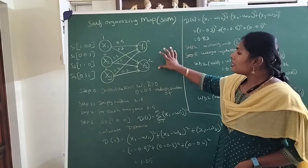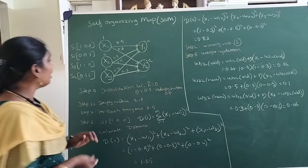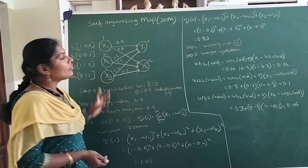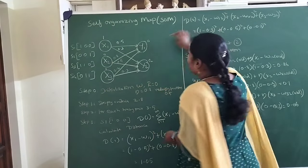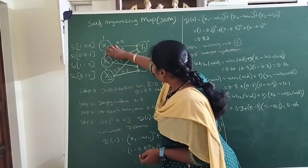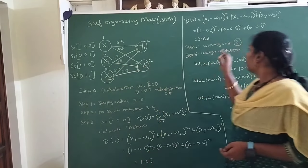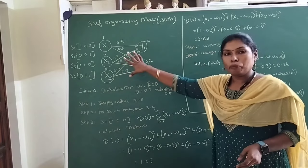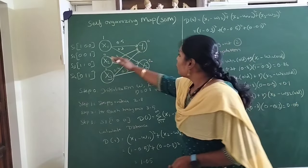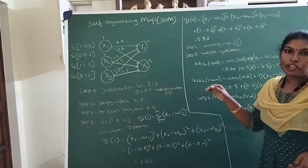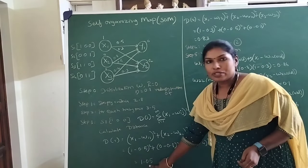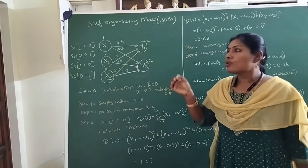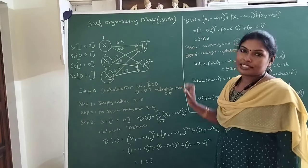Now I find the distance between the presented input and cluster C2. That is calculated as: 1 minus 0.3 the whole square, 0 minus 0.5 the whole square, and 0 minus 0.3 the whole square — i.e., x1 minus w12, x2 minus w22, x3 minus w32. Applying the formula, I get the value of 0.83. Comparing the two clusters: cluster 1 has distance 1.05 and cluster 2 has distance 0.83. Since 0.83 is the minimal value, I choose the second cluster as the winning cluster unit.